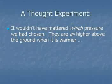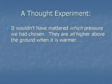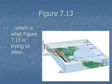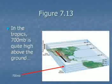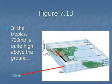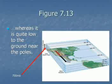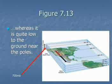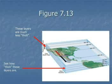The fact that pressure surfaces like 500 millibars are higher above the ground when it's warmer below, and closer to the ground when it's colder below, is an important generalization. In general, all pressure surfaces are higher above the ground when it is warmer. Looking at a figure, you can see that the 700 millibar surface is quite high above the ground in the tropics, but near the poles where it's very cold, the 700 millibar surface is much closer to the ground. Layers near the poles are much less thick; layers near the tropics are much more thick.